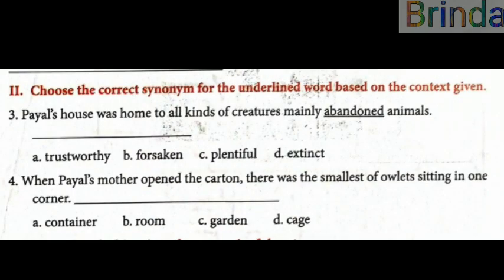Moving on to Roman number two: Choose the correct synonym for the underlined word based on the context given. Sentence: Pile's house was home to all kinds of creatures, mainly abandoned animals. You have already studied this in the book. The options for the synonym of 'abandoned' are: trustworthy, forsaken, plentiful, extinct.